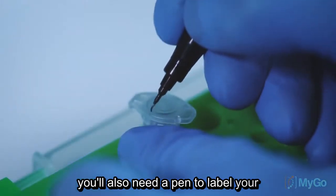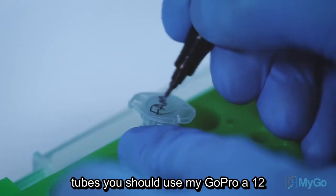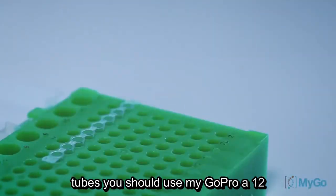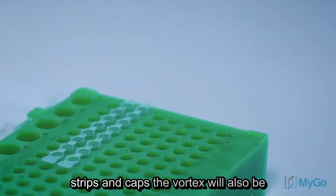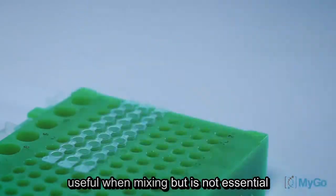You'll also need a pen to label your tubes. You should use MIGO Pro 8-well strips and caps. A vortex will also be useful when mixing, but is not essential.